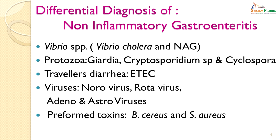Considering his history, the differential diagnosis of non-inflammatory gastroenteritis includes Vibrio species; protozoa — Giardia, Cryptosporidium and Cyclospora being the commonest ones; traveller's diarrhoea by enterotoxigenic E. coli; viruses — Norovirus, Rotavirus, Adeno and Astroviruses. It could also be caused by preformed toxins produced by Bacillus cereus and Staphylococcus aureus.